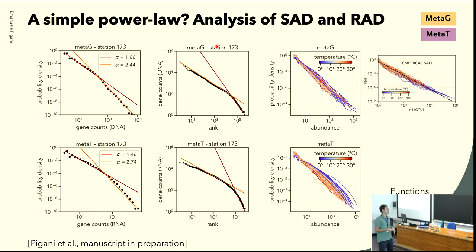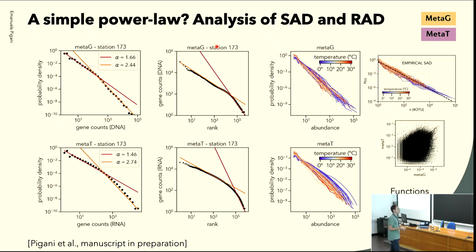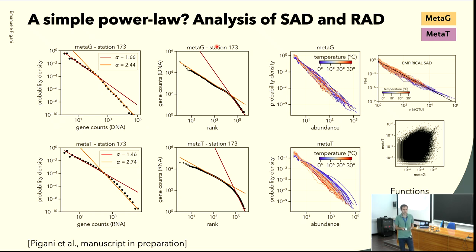The question is basically: why do we observe these two slopes? What is the meaning of these two slopes?